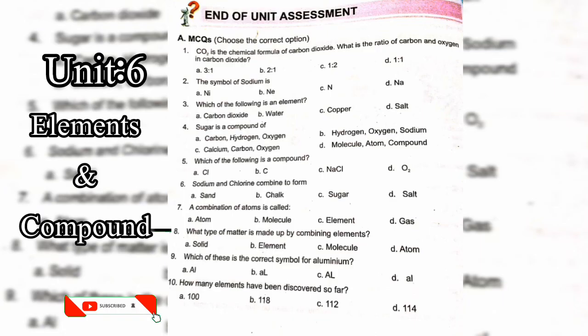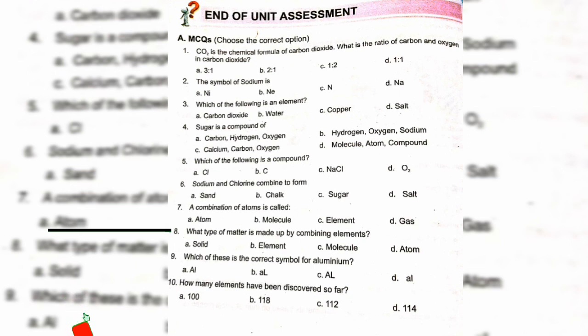Unit 6: Elements and Compounds MCQs. What is the chemical formula of carbon dioxide? What is the ratio of carbon and oxygen in carbon dioxide? The answer is one to two — option C.